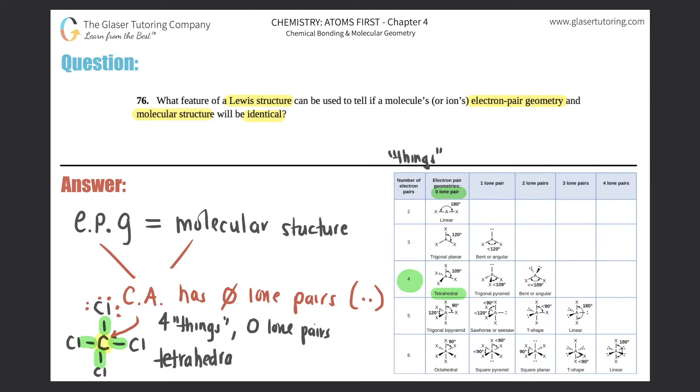And it's only—if I can just highlight this—it's only this column in which your electron pair geometry, your EPG, will equal the molecular structure because they have zero lone pairs. But when I have lone pairs, one lone pair all the way to four lone pairs around the central atom, that's when your electron pair geometry would not equal the molecular structure.